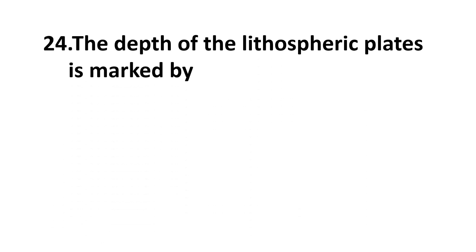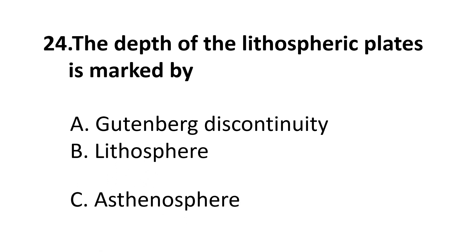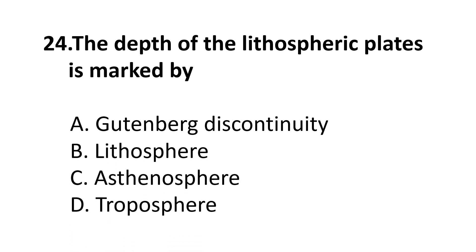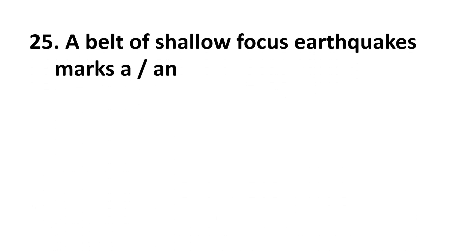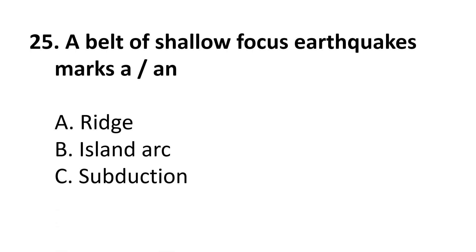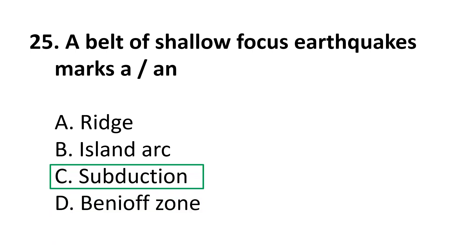Question 24: The depth of the lithospheric plates is marked by — choices are: A) Gutenberg discontinuity, B) Lithosphere, C) Asthenosphere, D) Troposphere. The correct answer is C) Asthenosphere. Question 25: A belt of shallow focus earthquakes marks — A) A ridge, B) Island arc, C) Subduction, D) The beginning of June. The correct answer is C) Subduction.